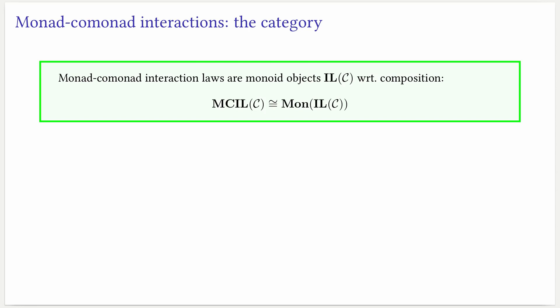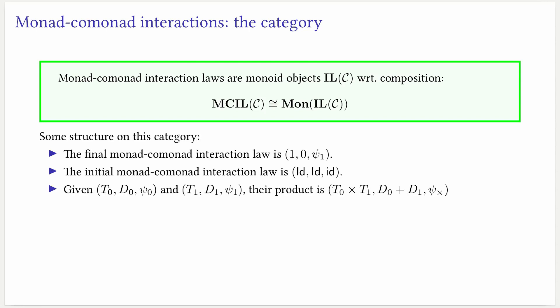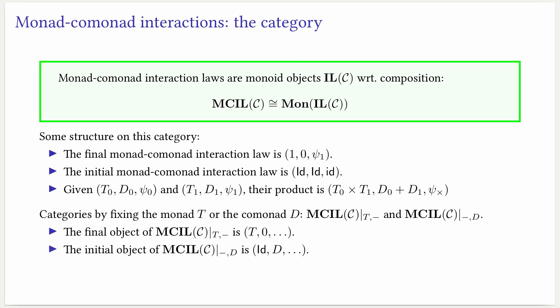Additionally, we have some structure on this category. We have the final monad-comonad interaction law, given by constant 1 and 0, and the initial monad-comonad interaction law, given by the identity monad, the identity comonad, and the identity natural transformation. Given two interaction laws, we can calculate their product in this category. Moreover, we can consider variants of these categories in which we either fix T or D, and in each case we calculate either the initial or the final object.